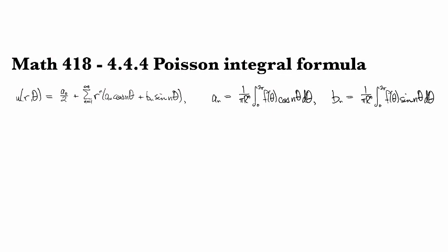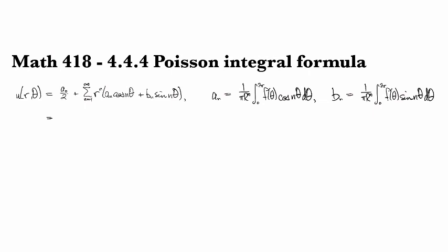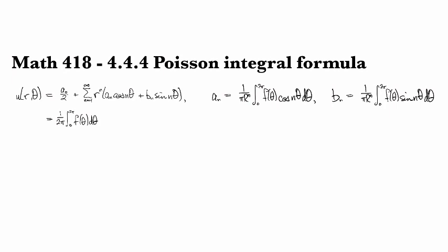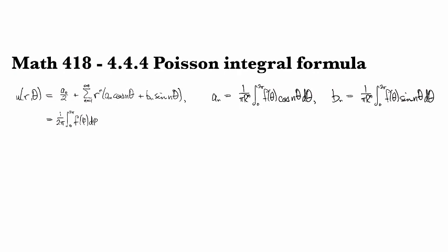We can rewrite this by using the formulas for the coefficients and putting them in place. So the constant one becomes 1 over 2π times the integral of f(θ) dθ. And actually, let's switch to a different variable. So the dummy variable of integration is going to be φ.